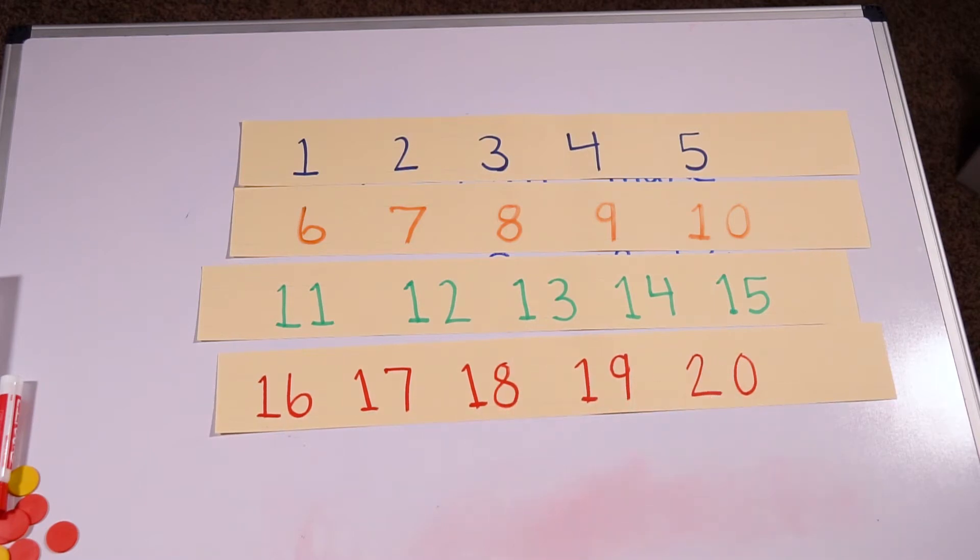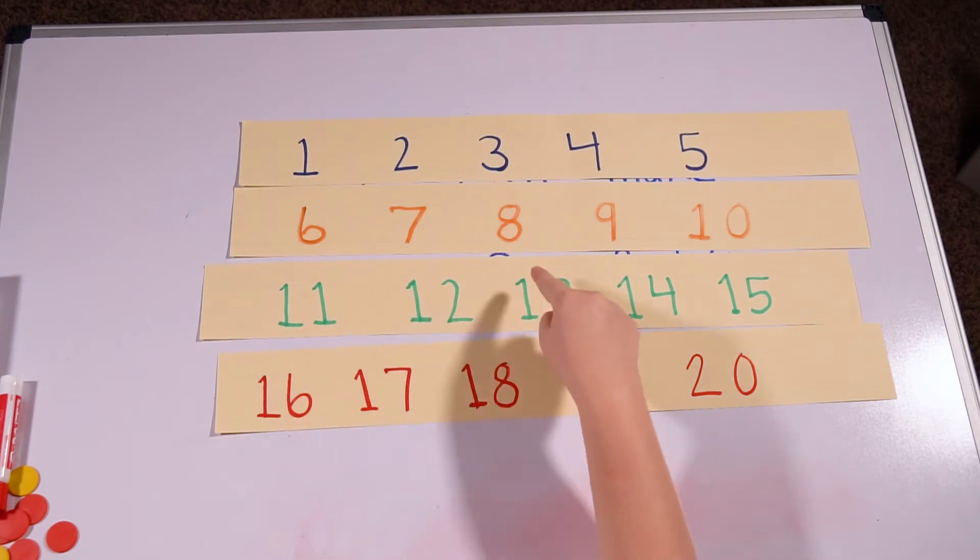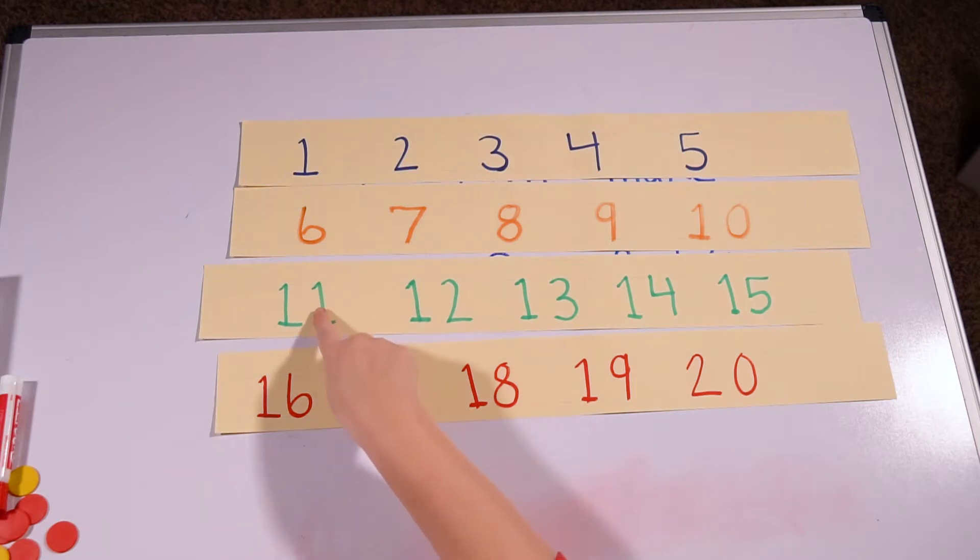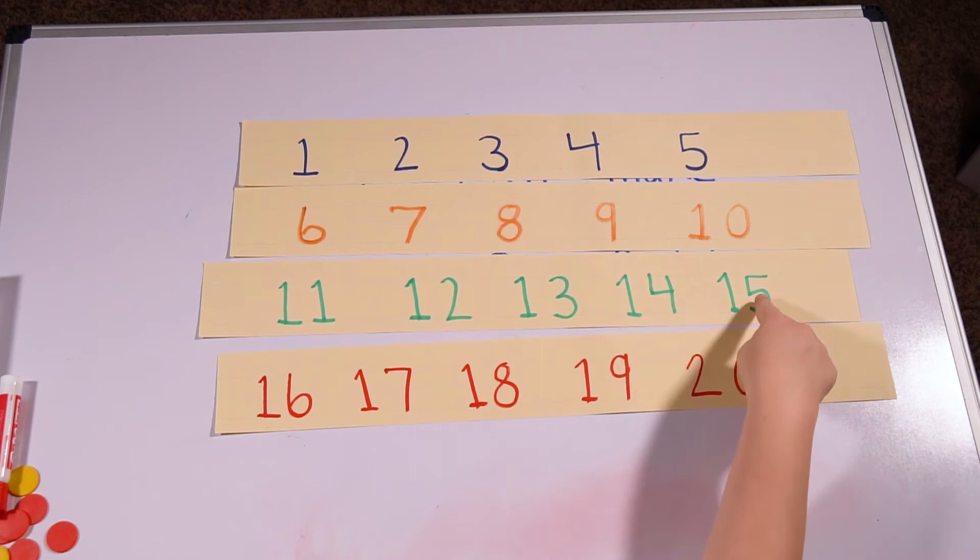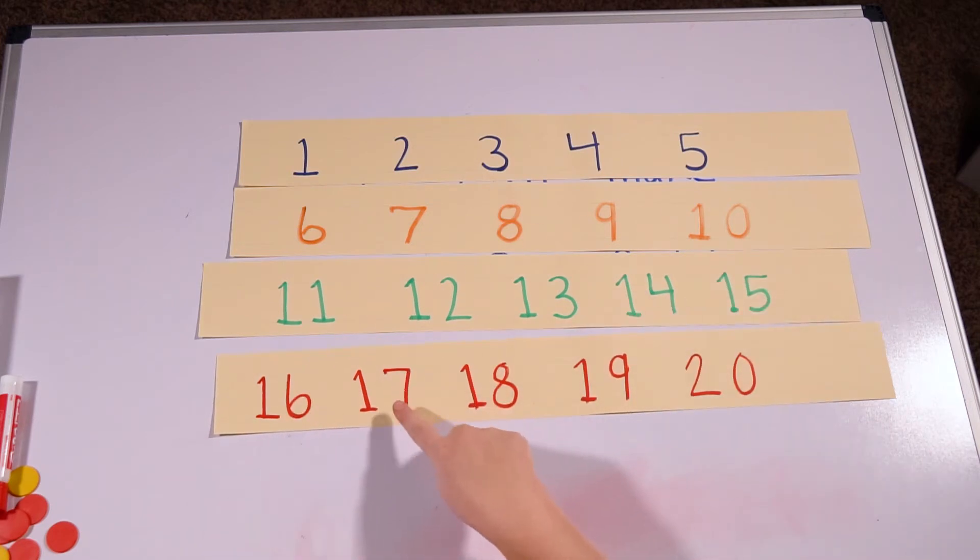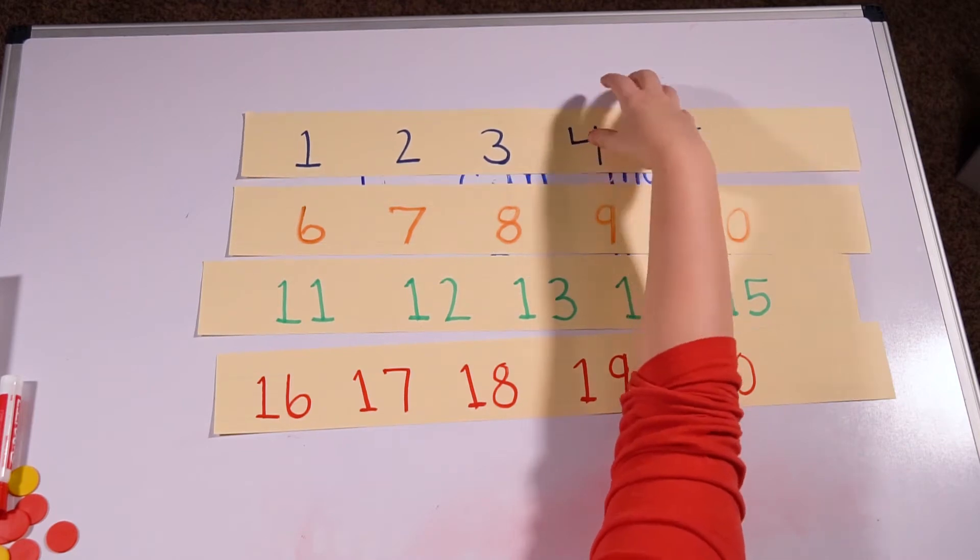Let's count the last 10 numbers again because we're going to be focusing on these three numbers today. So let's count these last, the green numbers and the red numbers. Let's count those again. One, or 11, 12, 13, 14, 15, 16, 17, 18, 19, 20. Very good.